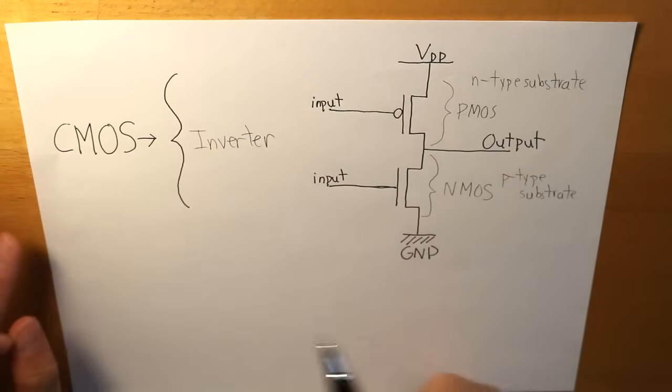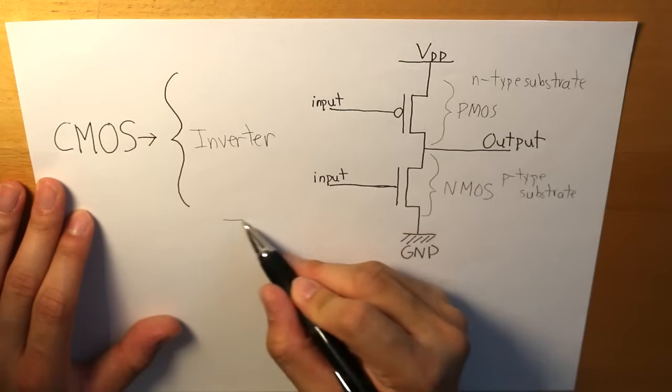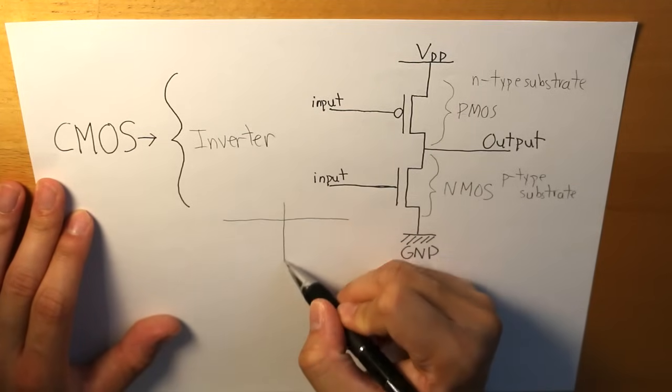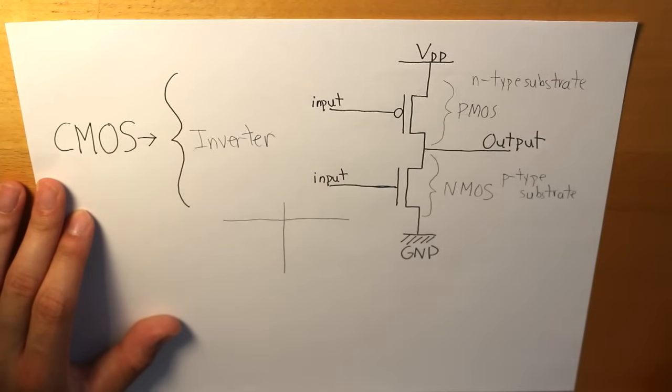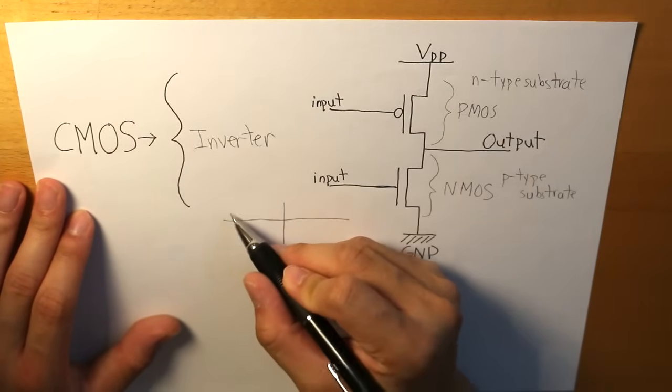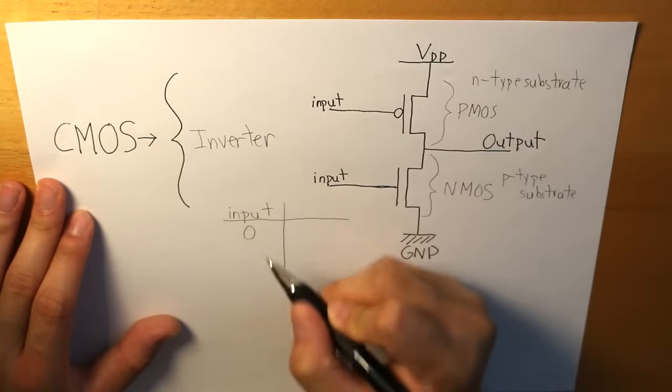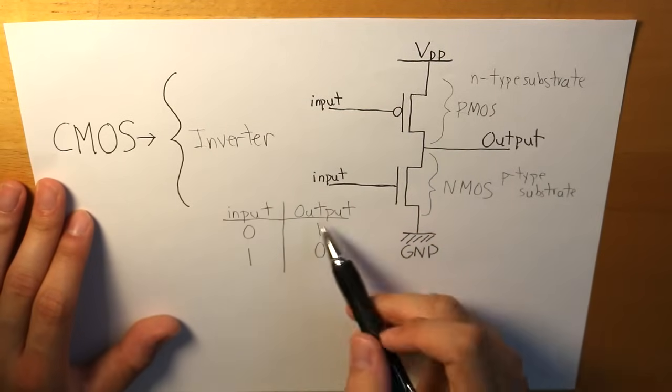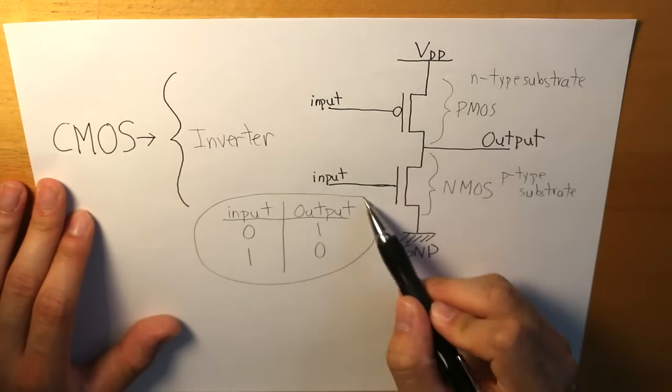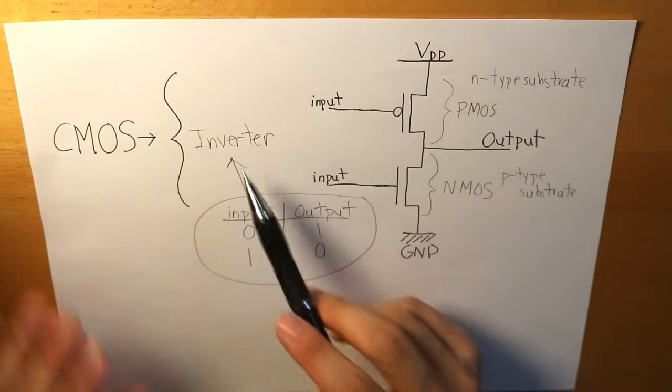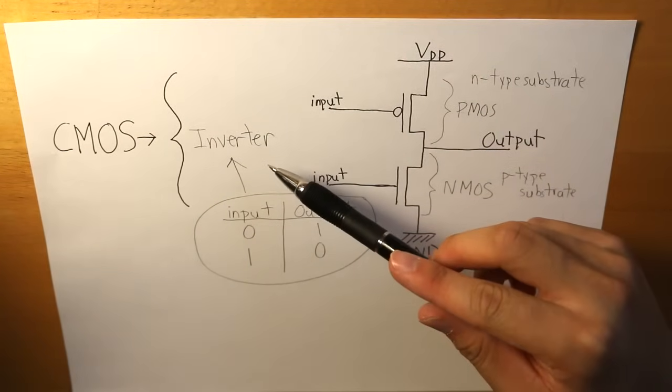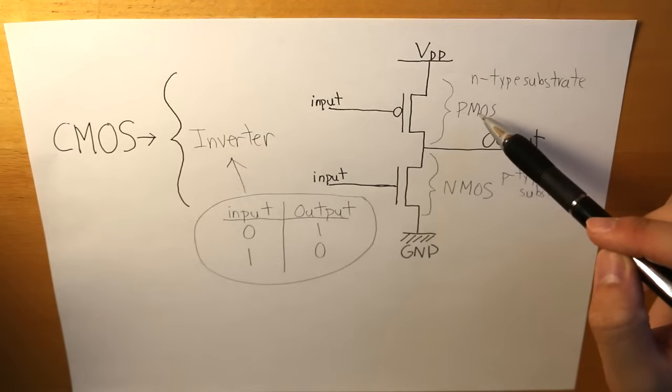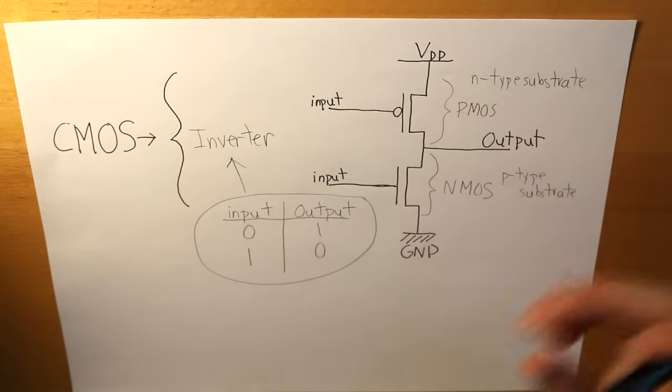And I'm just going to draw the output table for this just so you guys would be able to recap what I just said. So our input right here: zero and one, and our output will be one and zero. This right here is what this inverter is, and this inverter is basically formed by having a PMOS and an NMOS formed together, and this creates what our CMOS is. So that's how CMOS operates.